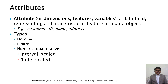This slide shows what is an attribute. Attributes are dimensions, features, variables, or data fields representing characteristics or features of a data object. For example, customer ID, name, address. Attributes can be of different types such as nominal, binary, numeric — also called quantitative — which can be further divided into interval scale and ratio scale.